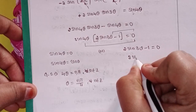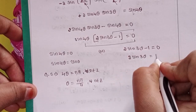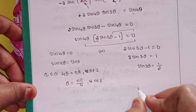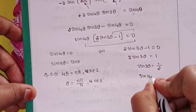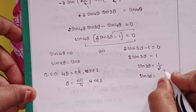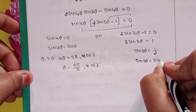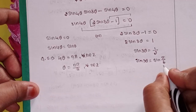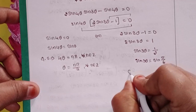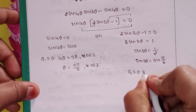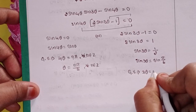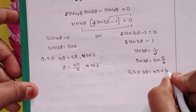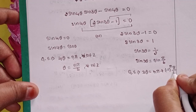For the second case: 2sin3θ = 1, so sin3θ = 1/2. In terms of sine, sin(π/6) = 1/2, so sin3θ = sin(π/6). Using sinθ = sinα general solution: 3θ = nπ + (-1)^n · π/6.